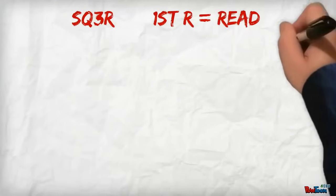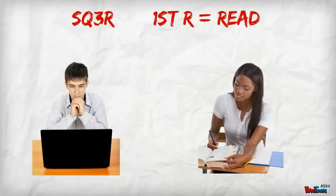The first R in the three R's is to read. You're now going to answer the list of questions you've created by actually reading the text.